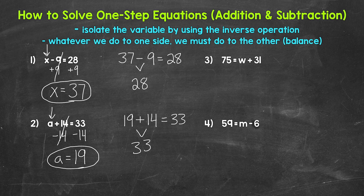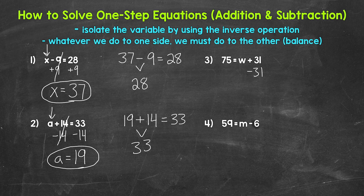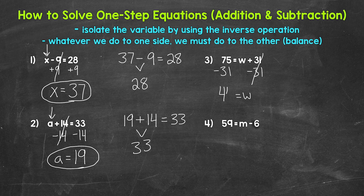Moving on to number 3, we have 75 equals W plus 31. For number 3, the variable is on the right side of the equation — a little bit of a different look, but we use the same exact process. So we have what plus 31 equals 75. We are adding 31 here, so the inverse operation — the opposite of addition — is subtraction. So let's subtract 31 from the right side of the equation. Whatever we do to one side, we must do to the other, so subtract 31 from the left side as well. On the right side, we are adding 31 and subtracting 31, so these 31s cancel each other out. W is now isolated. So W equals, and then on the left side, 75 minus 31 equals 44. So W equals 44 — that's our solution.